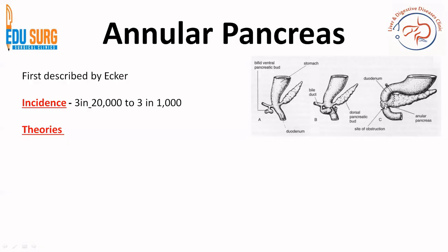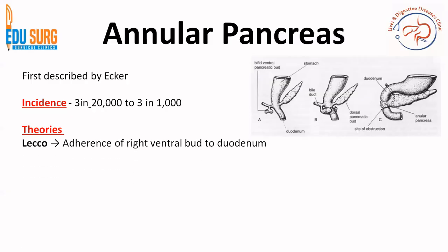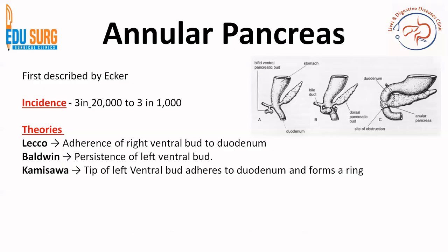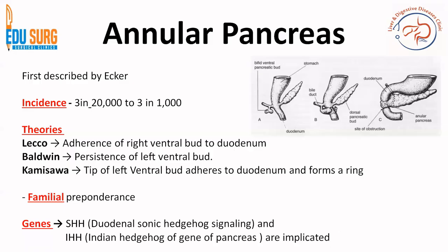Annular pancreas was first described by Ecker, with an incidence of 3 in 20,000 to 3 in 1,000. Three theories exist: Lecco's theory holds that persistence of the left ventral bud is not required and the condition results from adherence of the right ventral bud to the duodenum instead of rotation. Baldwin's theory suggests persistence of the left ventral bud. Kamisawa's theory proposes that the tip of the left ventral bud adheres to the duodenum and forms the ring. It has familial preponderance, with involvement of the duodenal sonic hedgehog and Indian hedgehog signaling pathway genes.